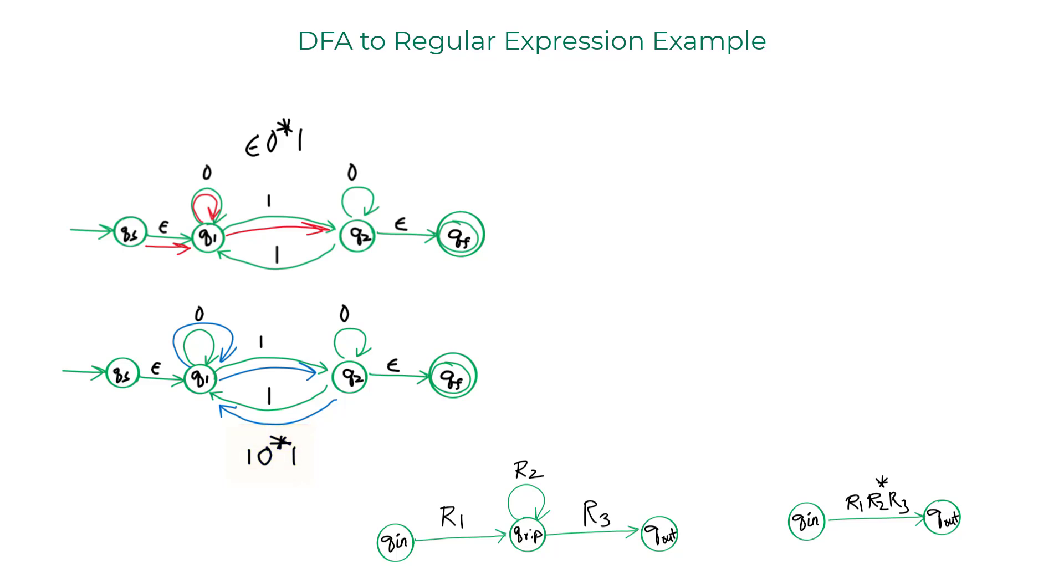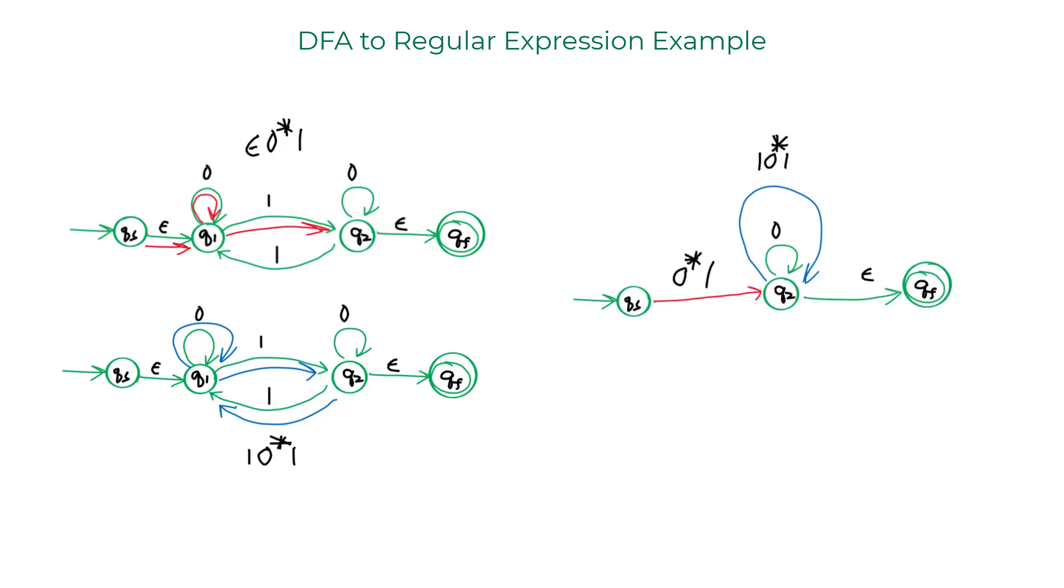Now I can remove Q1 and then reconnect all the states that are remaining this way. Because the red path is connecting Qs with Q2 and the regular expression is 0 star 1, I'm going to write it there. And the blue path is looping from Q2 back to itself. So I have this another loop with 1 0 star 1.